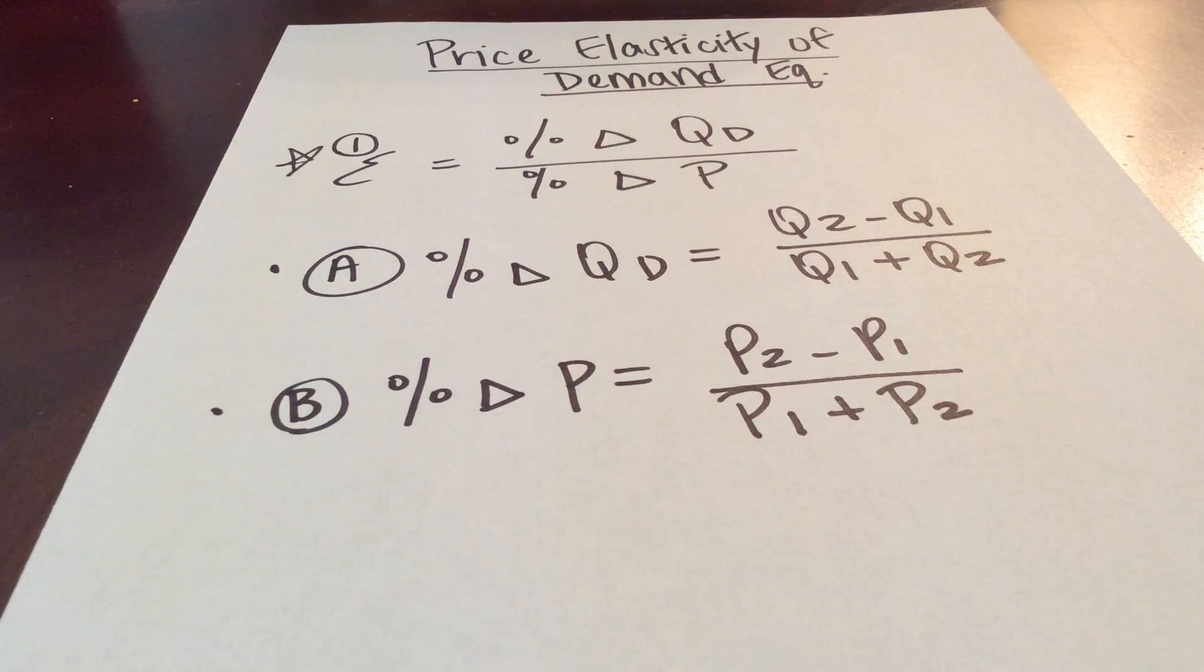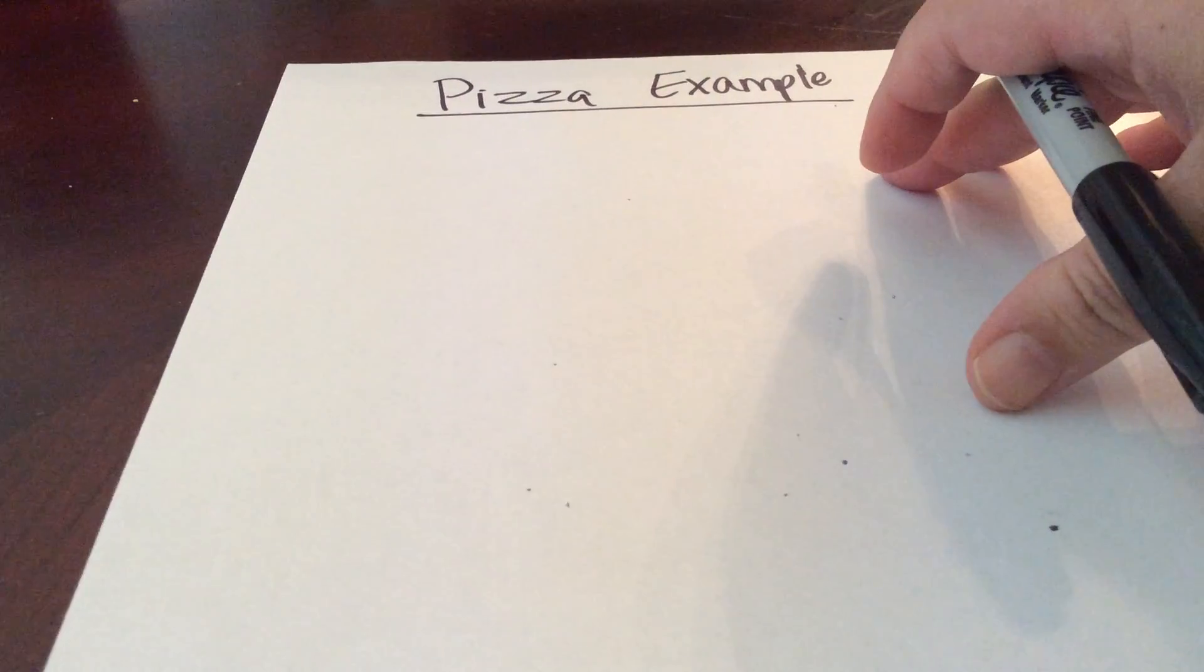P2, the new price, minus P1, the original price, divided by P1 plus P2. So now let's see what this looks like with the actual pizza example from those PowerPoint slides and the textbook.